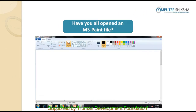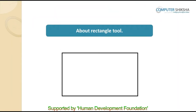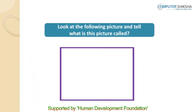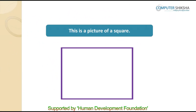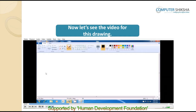Have you all opened the MS Paint file? Can you tell what the rectangle tool is? In the rectangle tool, just like in a rectangle, you will find that the lines facing each other are equal in length. To make it easy to find the rectangle tool, it has been put inside a red circle. Look at the following picture and tell what it is called. This is a picture of a square. Now let's watch the video to learn how this picture can be made.